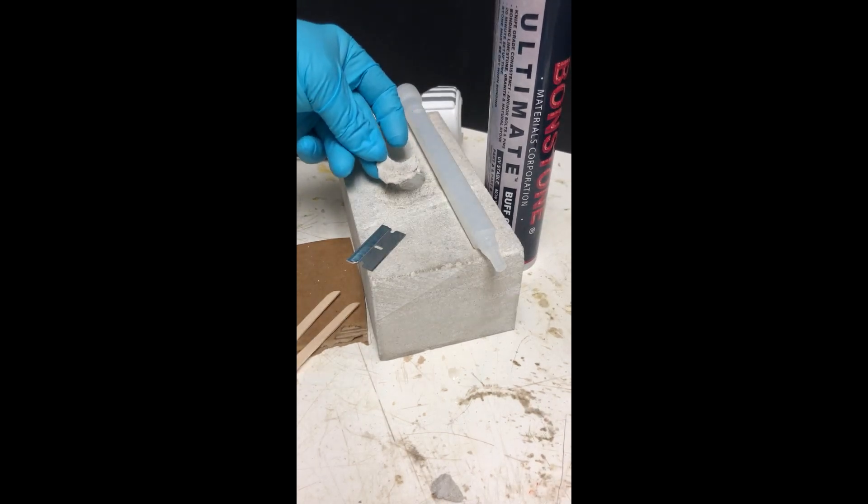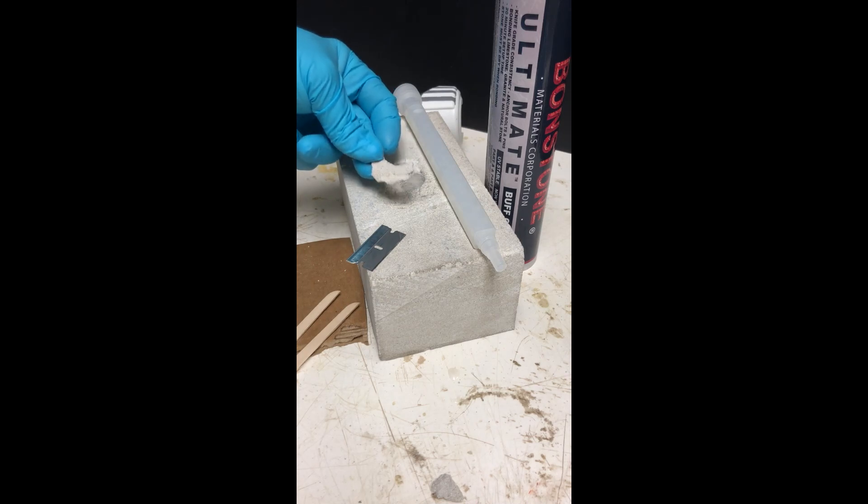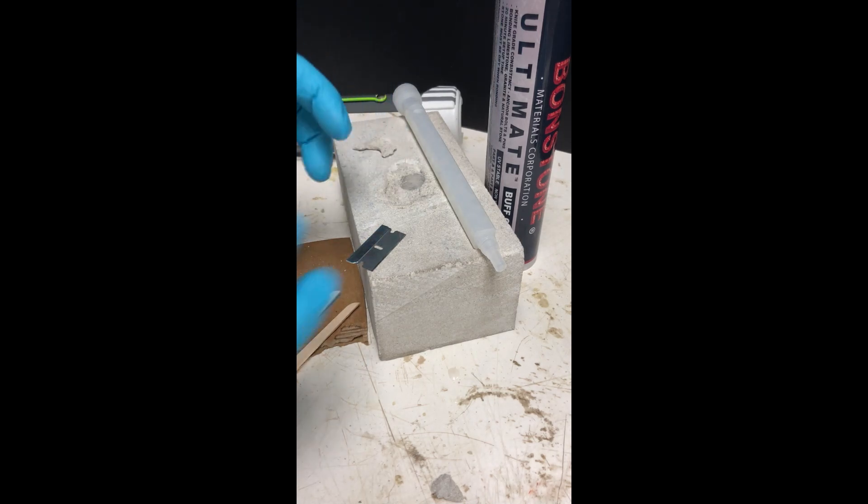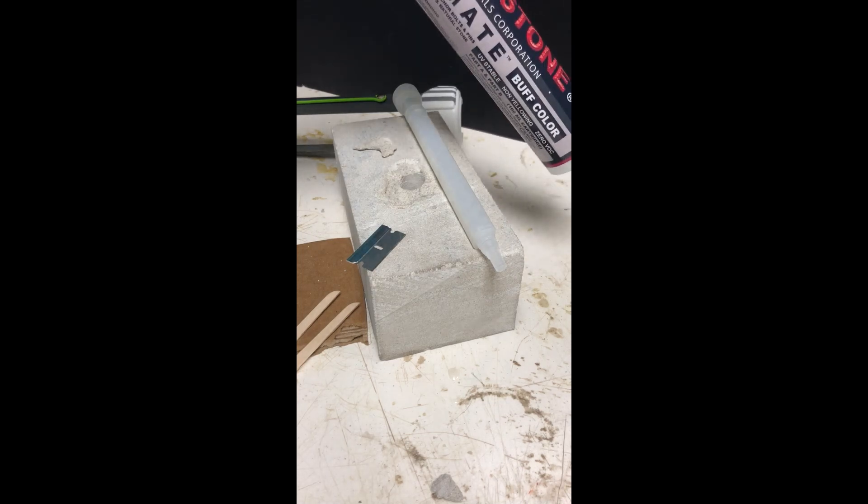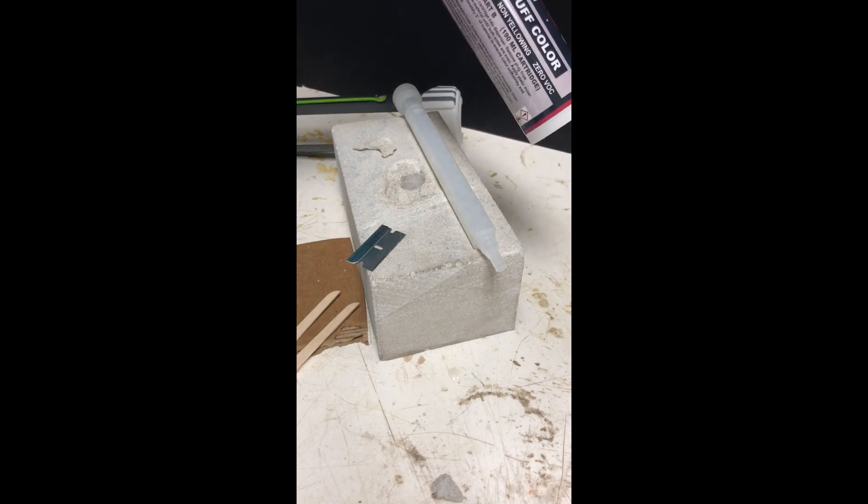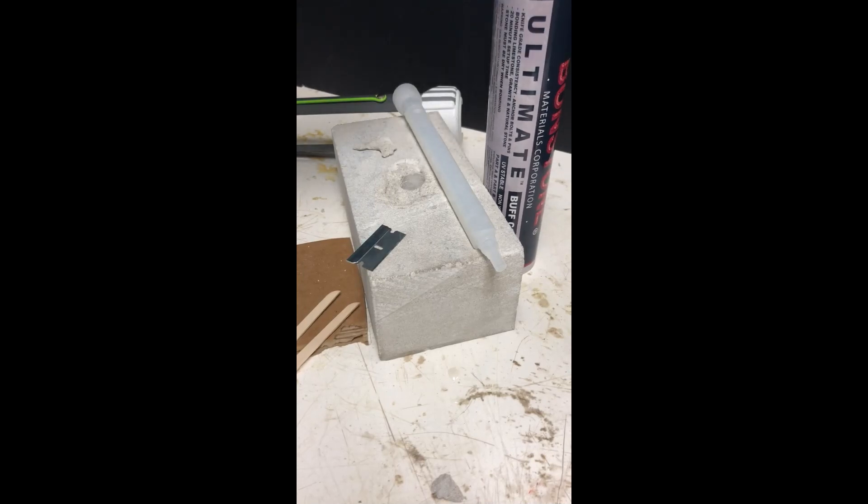When you're gluing back in a chip or patching a hole with a bigger piece or reattaching a piece of stone, and it's a smaller piece maybe from three to six inches, you're going to want to use probably our ultimate buff color. It's an adhesive, it's UV stable, and it'll set up really quick so you can keep moving along.